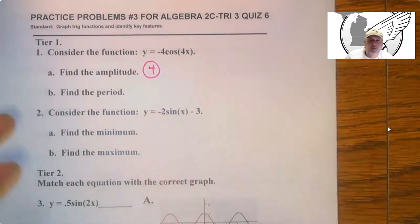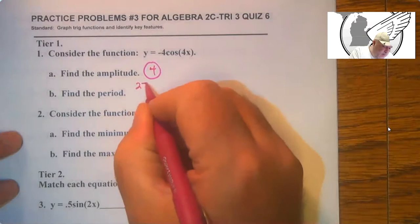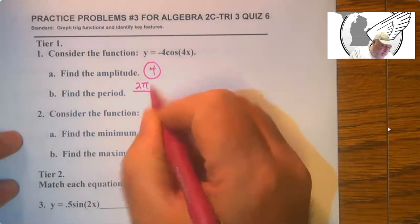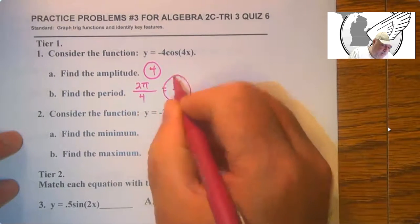So this time the absolute value does kick in. And 2π over the absolute value of B, which is 4. So π over 2 is the period.